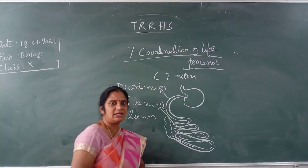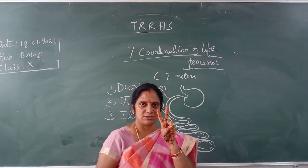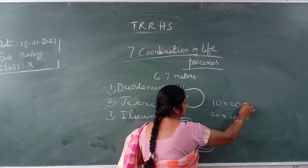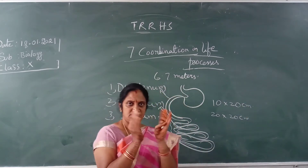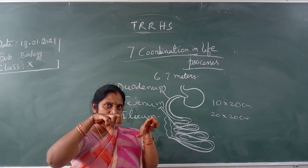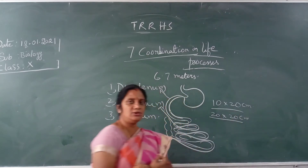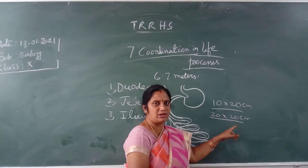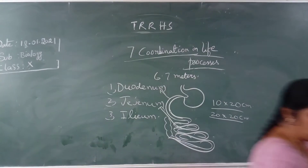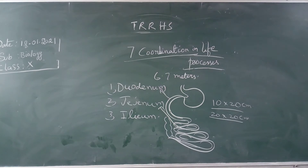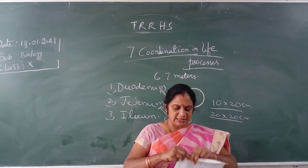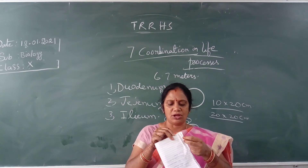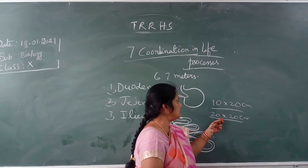So how do we conduct an experiment to understand this? Take two papers — one is 10 x 20 centimeters and the other is also 10 x 20 centimeters. Try to insert the big tube into the small tube. Once you try, you will see it is difficult. But if you fold the larger one like this, you can easily insert the larger tube into the smaller tube.